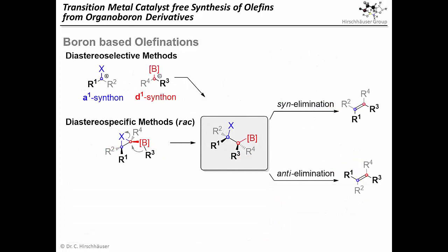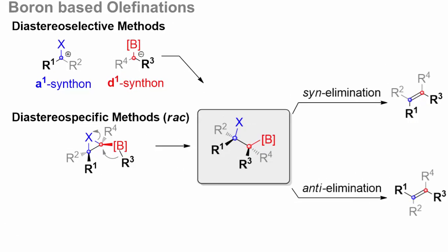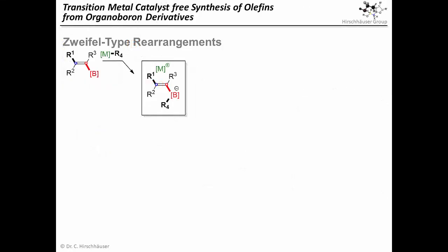As we just mentioned, vinyl boronic esters are great precursors for olefins with higher substitution patterns. This is because of a particularly facile 1,2-rearrangement reaction that can occur when their ate complexes are converted into small heterocycles, thus generating our central elimination precursors in a diastereospecific manner. The most prominent member of this type of reaction is certainly the Zweifel olefination. Vinyl boronate ate complexes can be generated either by reacting a vinyl boronic ester with an alkyl metal species, or vice versa by reacting a vinyl metal species with an alkyl boronic ester. Either way, an ate complex is generated that upon oxidation can undergo a 1,2-rearrangement.